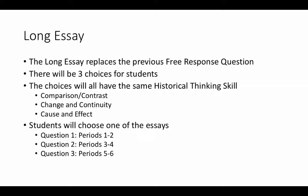The good news is all that's changed. There are now three choices for students. All three choices will be around one historical thinking skill — either comparison contrast, change in continuity, or cause and effect. Questions one, two, and three will cover all the periods in AP World History. If students can't remember periods one and two for question one, they've got question two for periods three and four, and question three for periods five and six. Students will really have to be familiar with something and be able to write to one of these questions.